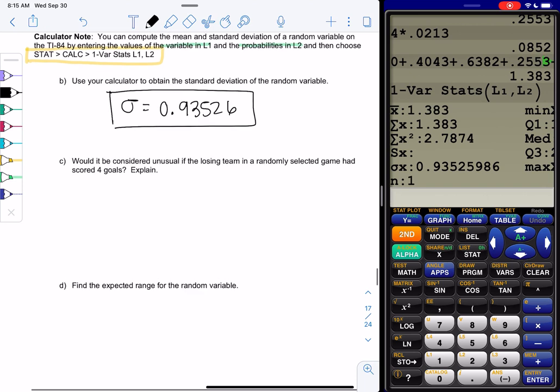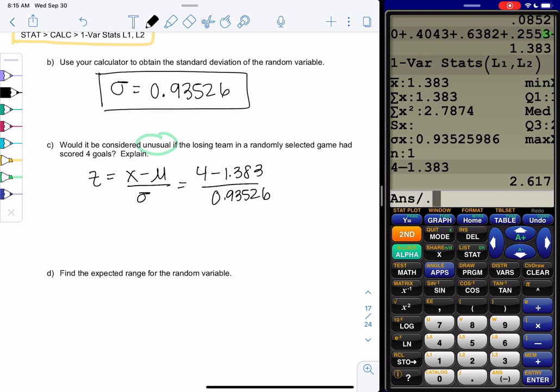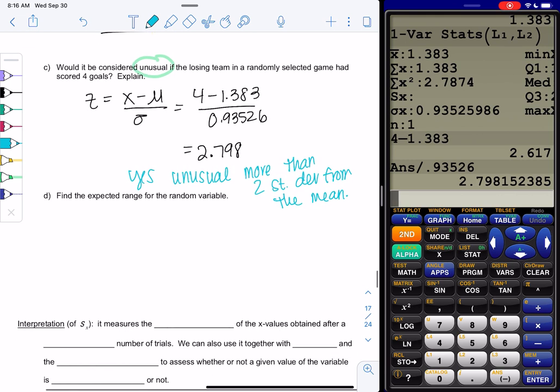And then how do we decide unusual or not? So we may or may not remember, but unusual was z-score. So we're going to do the data value minus the mean over standard deviation. So 4 goals minus that 1.383 all over the standard deviation. So 4 minus 1.383, enter and then divide 0.93526. 2.798. Is this unusual? Yeah, because it's more than 2 standard deviations from the mean.